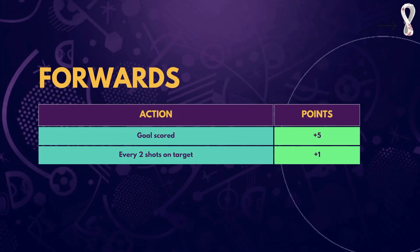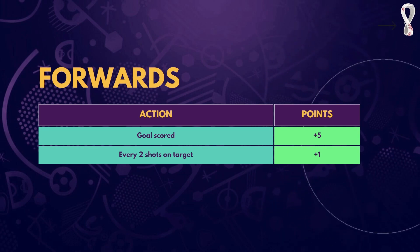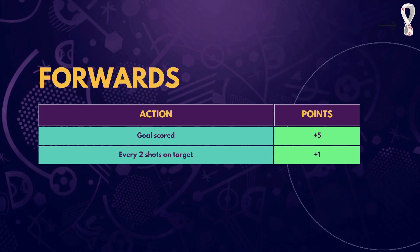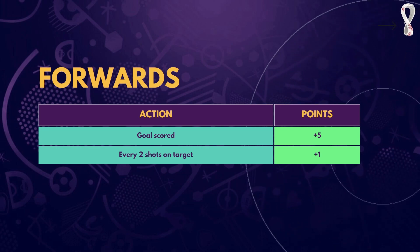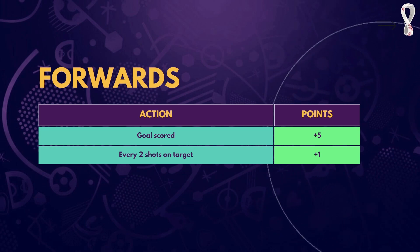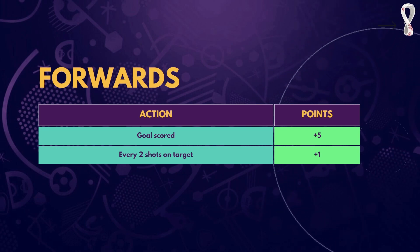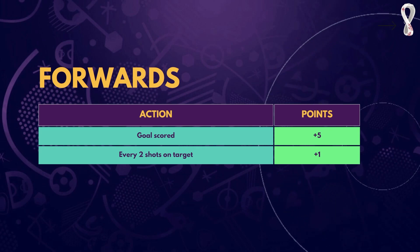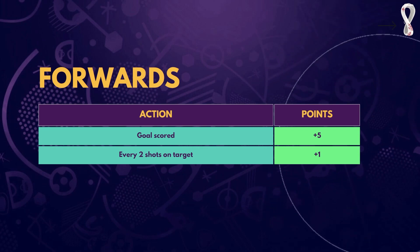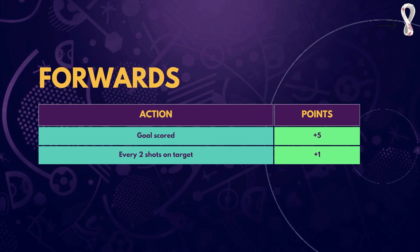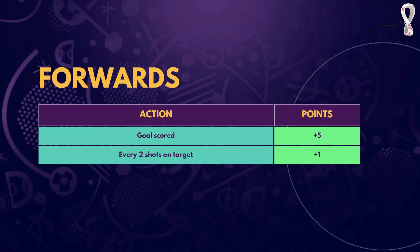For forwards, every goal scored gives plus 5. Also, for every 2 shots on target it's plus 1, so try to get in forwards who take a lot of shots and are likely to get shots on target. Forwards do not get any points for a clean sheet, and points won't be deducted for goals conceded either. Try to get in goal-scoring forwards who take a lot of shots — maybe more selfish players who will try to score themselves.